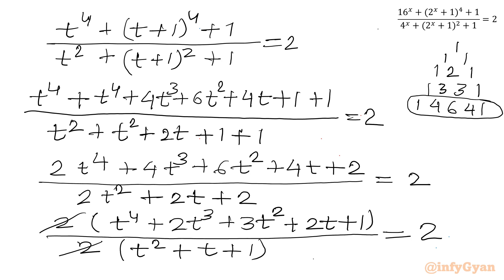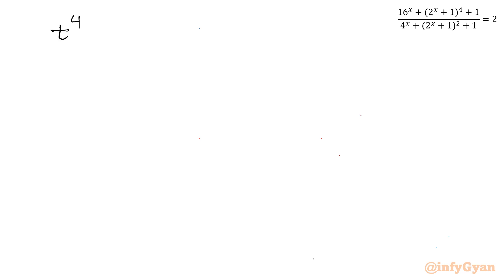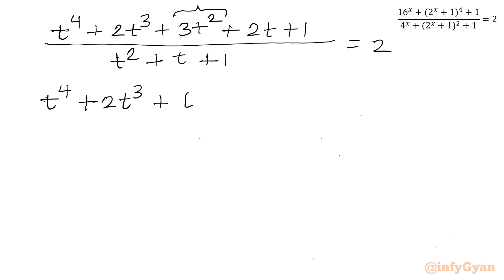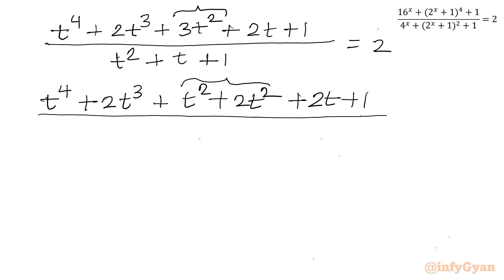Now I will use algebraic manipulation. Splitting 3t^2 as t^2 + 2t^2, I rearrange the numerator as: t^4 + t^2 + 1 + 2t^3 + 2t + 2t^2, denominator unchanged as t^2 + t + 1, right-hand side equals 2.